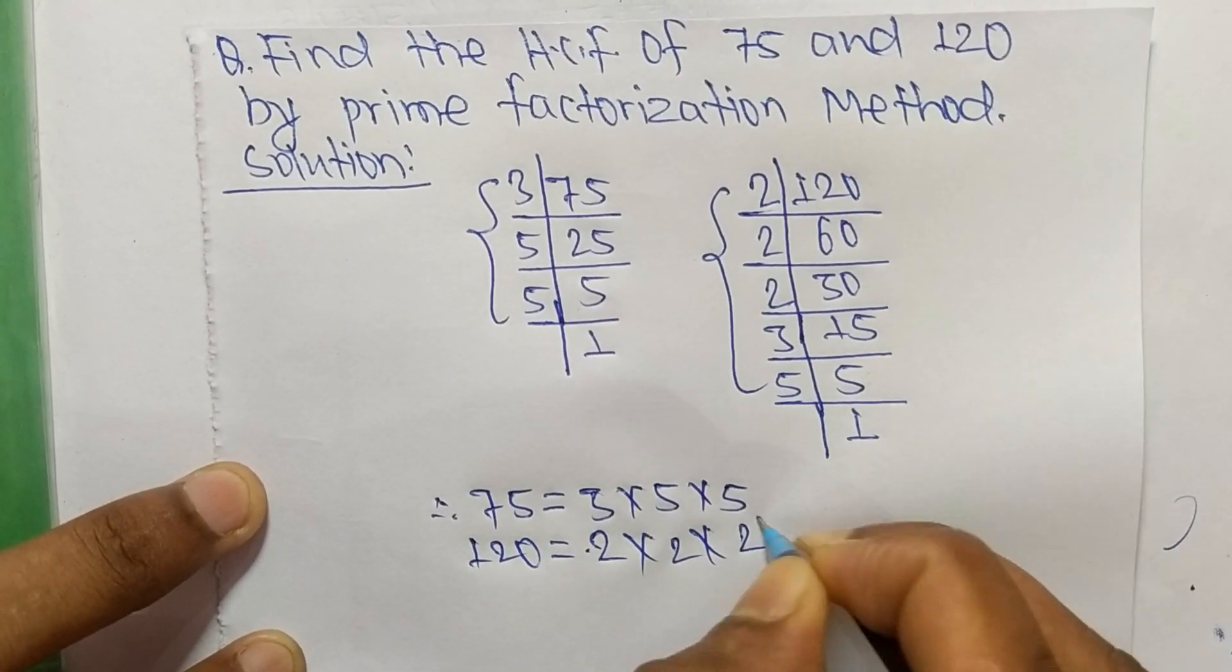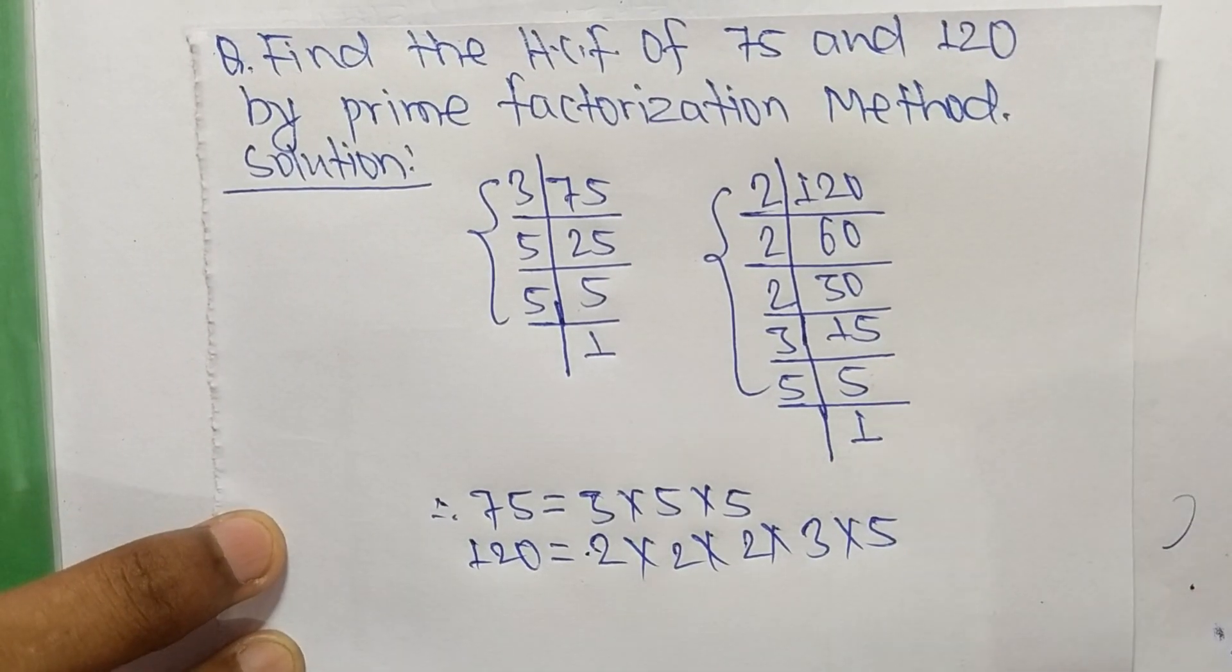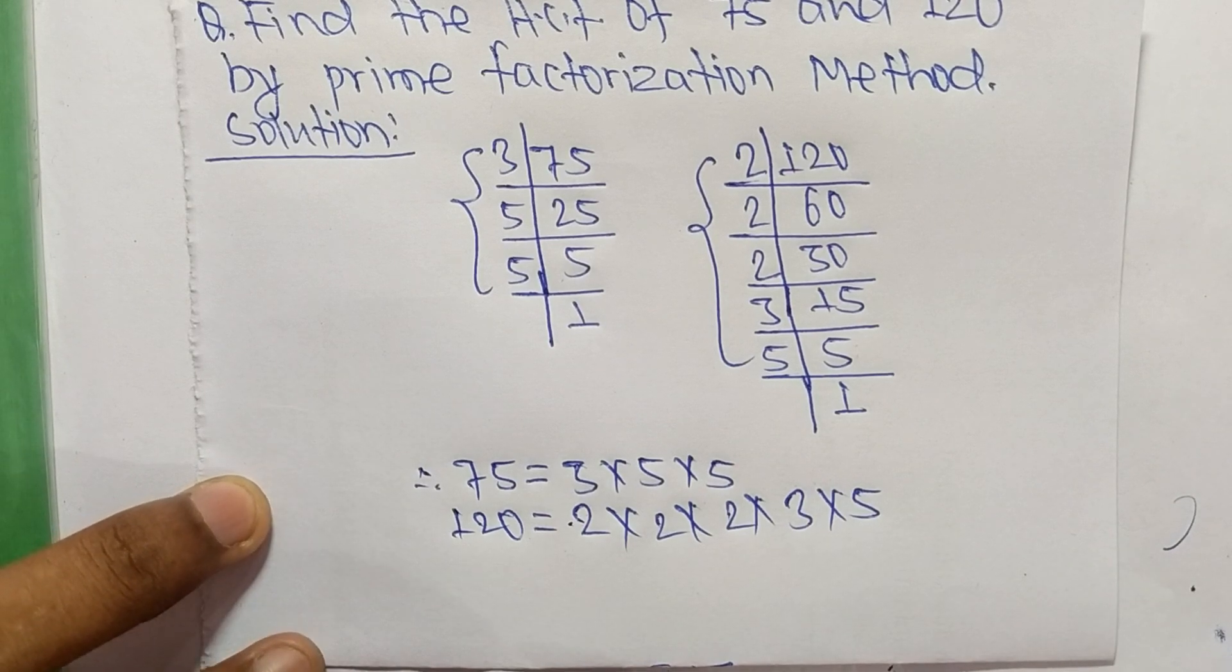Now we select the common factors in this prime factorization. So the common factors are 3 and 5.